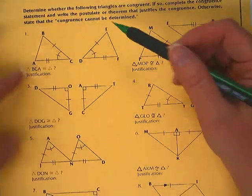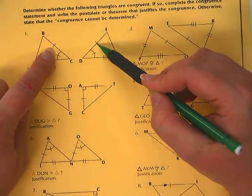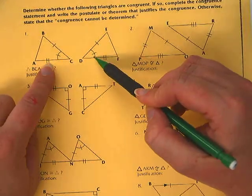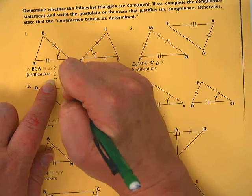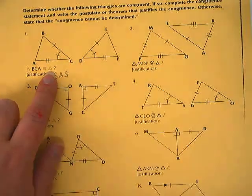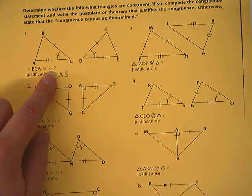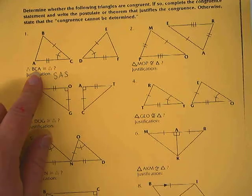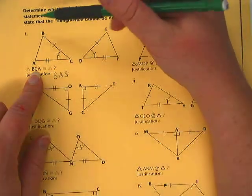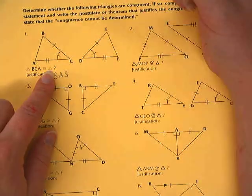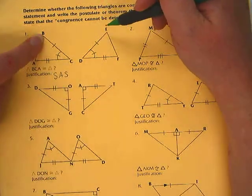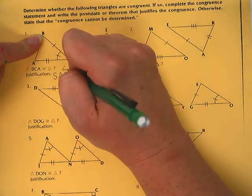Look at the first one, number one. Notice how we have a side congruent to a side, an angle congruent to an angle, and a side congruent to a side. That means these are congruent by side, angle, side. Now an important part of the process is to give the congruence statement. They've already done half of it for us, giving us the order they want it written in. So BCA is going to be congruent to, well what corresponds to B? Angle E does,